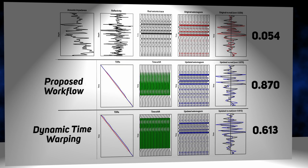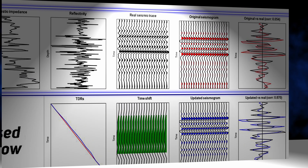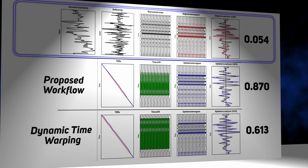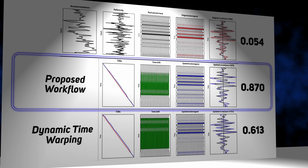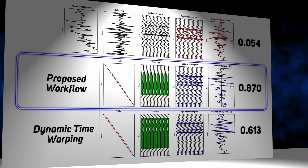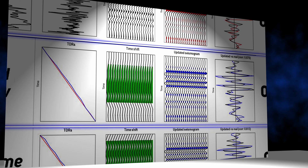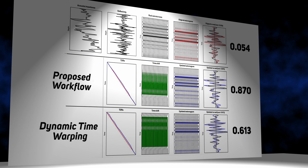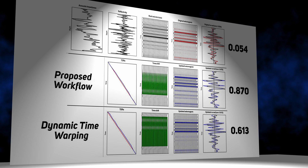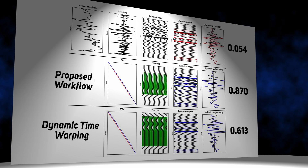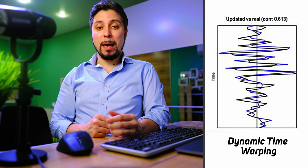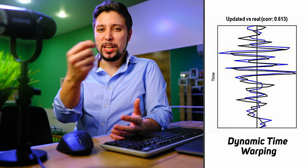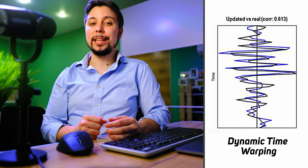Here are the results on the F3 dataset. There is a clear mismatch between the real seismic trace and the synthetic seismogram with a Pearson correlation coefficient of only 5%. The proposed workflow causes only minor changes to the time-depth function but successfully raises the synthetic seismogram so that major seismic events are well aligned. As a result, the Pearson correlation coefficient increased to 87%. In comparison, the traditional dynamic time warping scheme applied to the same well produced a seismogram only 61% correlated.